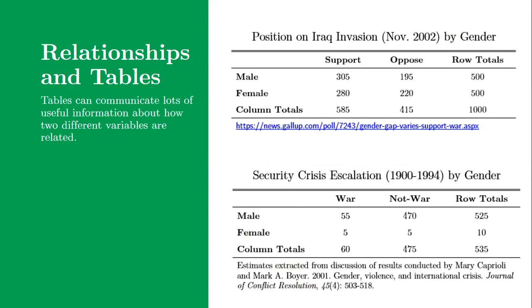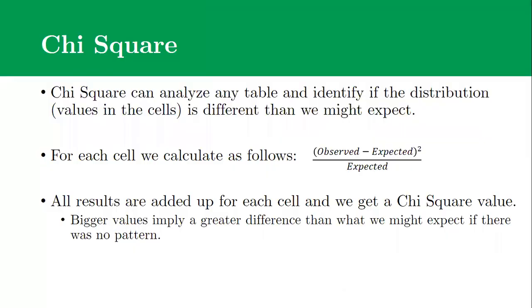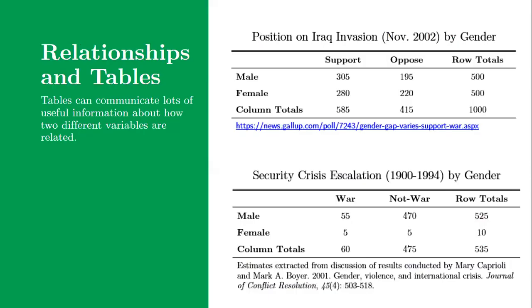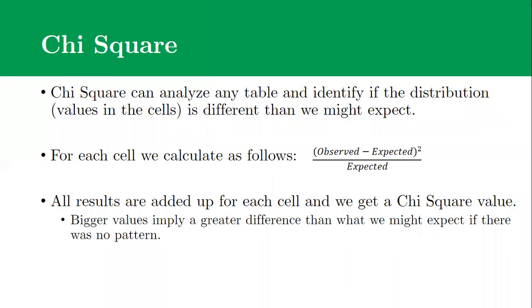Because tables can be really messy, statisticians have tried to find ways to maybe quickly look at a table and say, is there a pattern here? Are we seeing differences in terms of where things fall in these different cells? A chi-square test can give you a statistic that will analyze any table and identify if the distribution of values in the cells, the numbers in the support and oppose male, female, those four different boxes, if those numbers are different than what we might expect if there was no pattern there whatsoever.